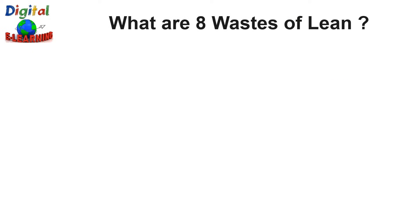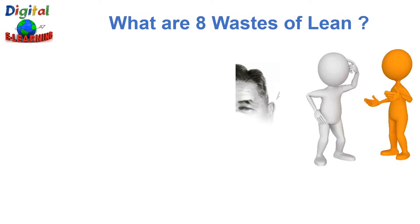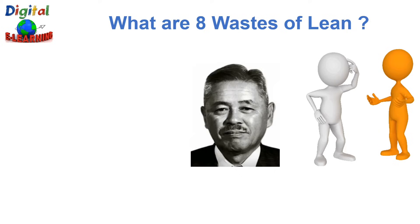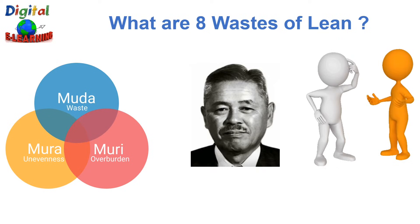So what are the 8 Wastes of Lean? Eliminating waste was one of the ideas of the founding fathers of lean manufacturing, Taiichi Ohno. He identified 3 major areas that have a negative impact on the work process. So these were muda, muri, and mura.